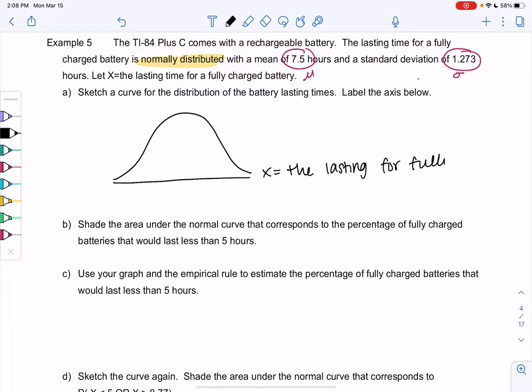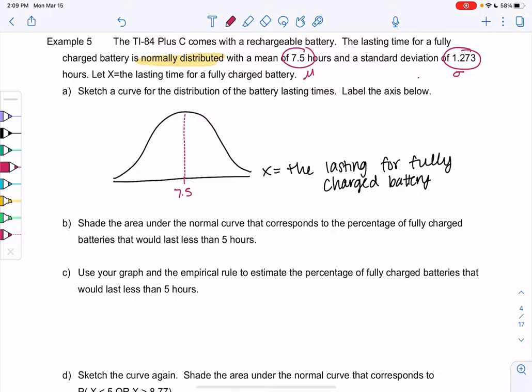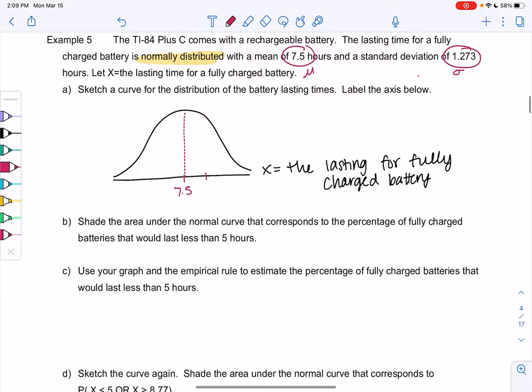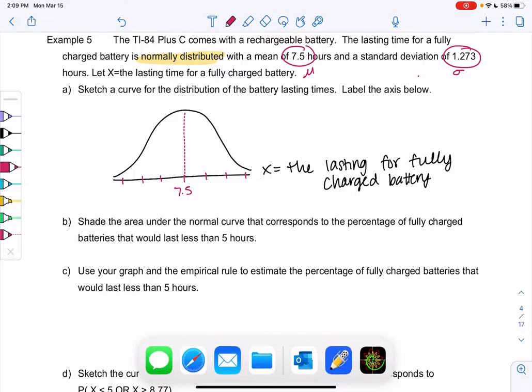So how long does the battery last? I find it nice to write that next to the graph, so that way when I look back later I remember what it's measuring. We're going to sketch the curve for the distribution, so that just means draw the normal curve and label it. So we labeled it in words, now let's label numbers. The mean goes in the middle, so we'll put 7.5 in the middle, and then we go 3 standard deviations in each direction. So we'll subtract 3 times and we'll add 3 times.